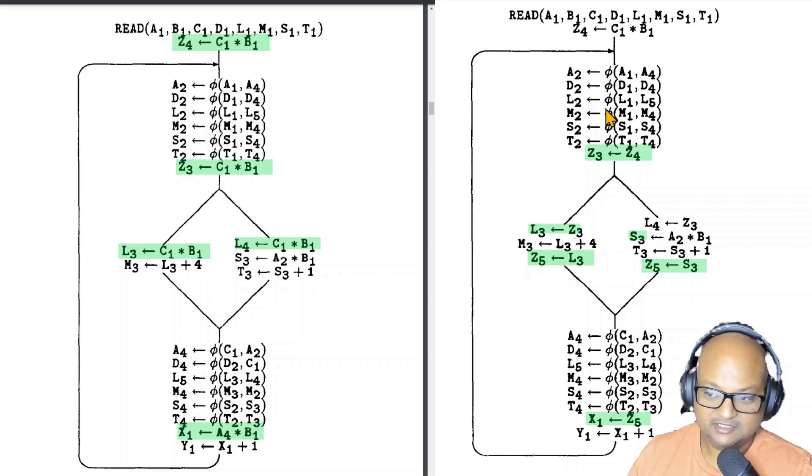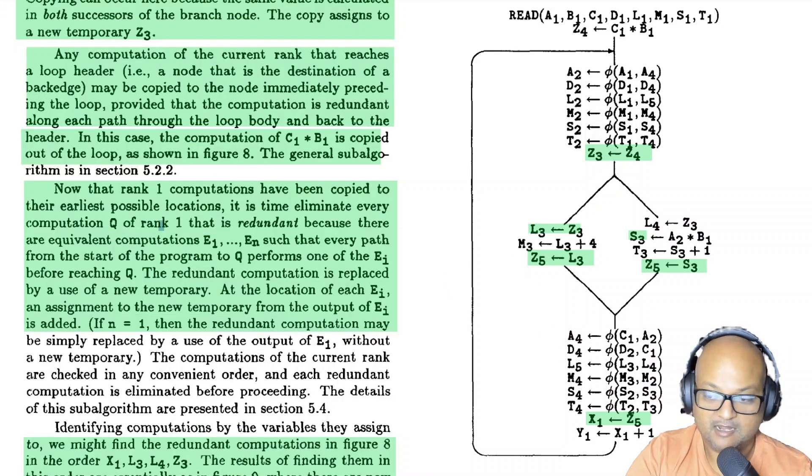And then moving down further this assignment of l3 as well as this assignment of l4 can also be eliminated and you could simply read that value from z3. And when you come out here to after the if statement you can see that the value of x1 can simply be replaced by the value of z5.